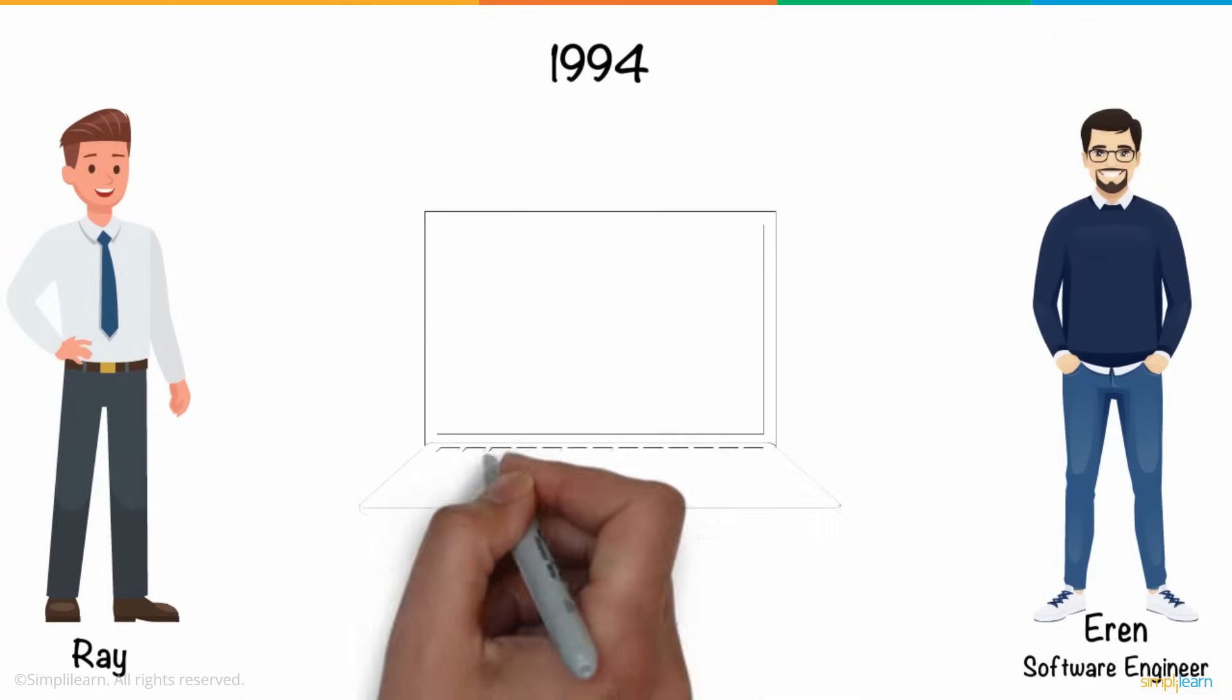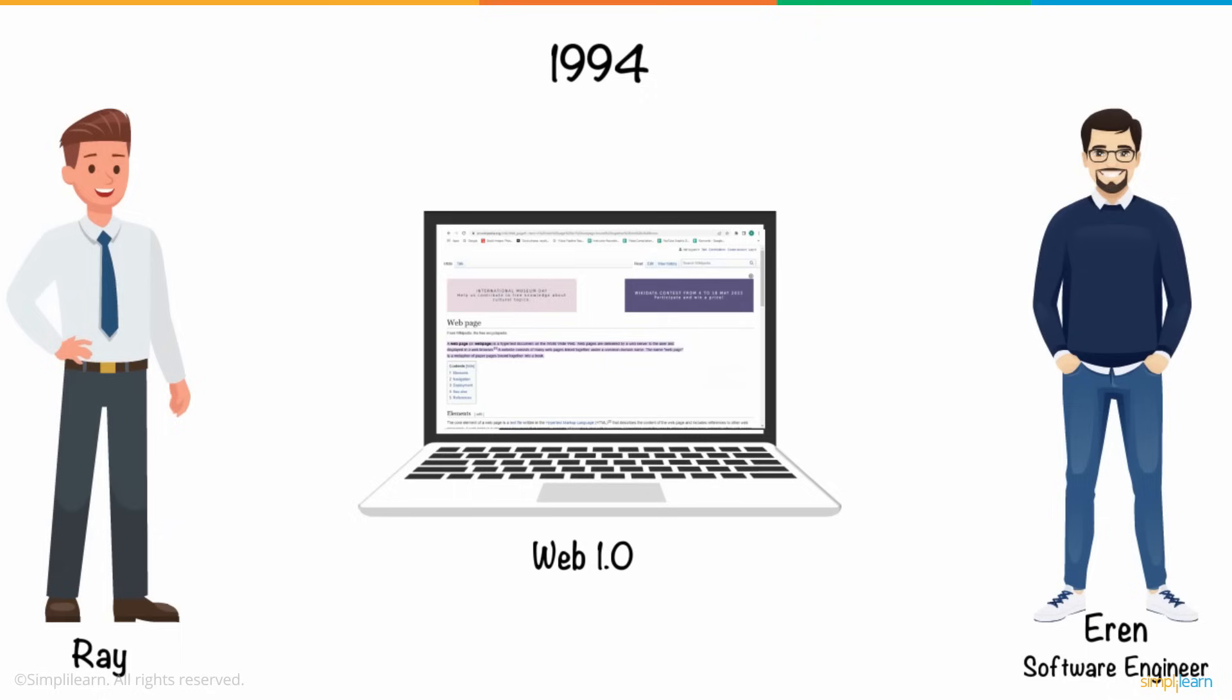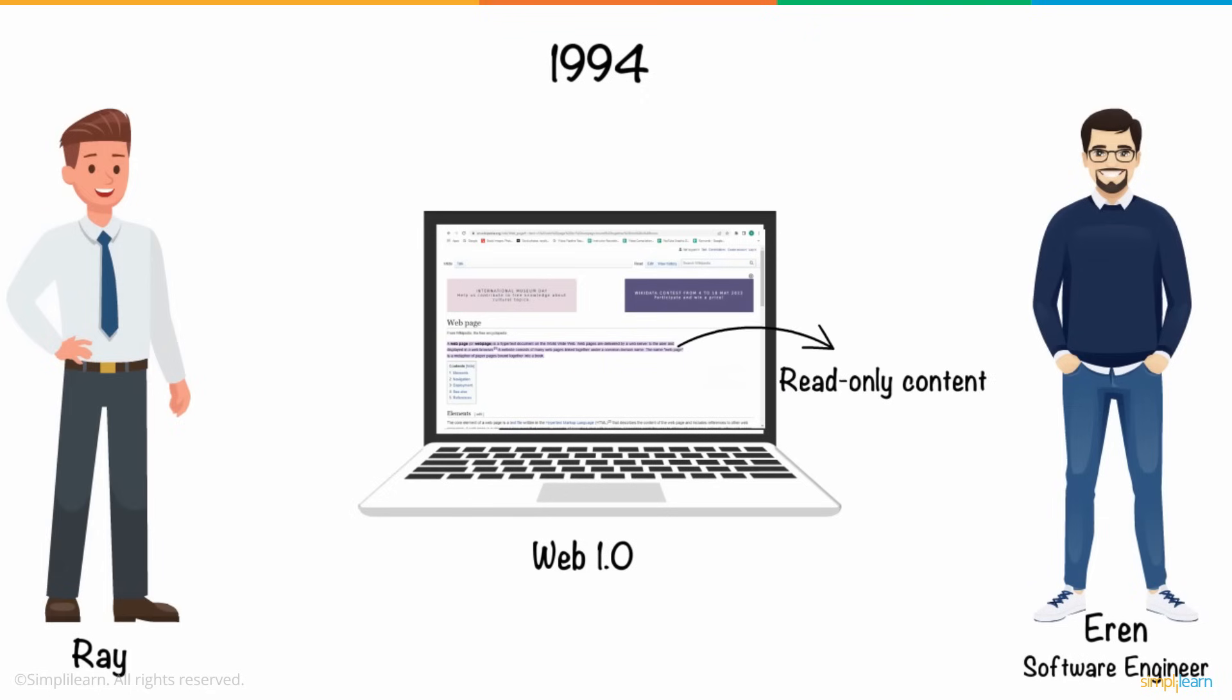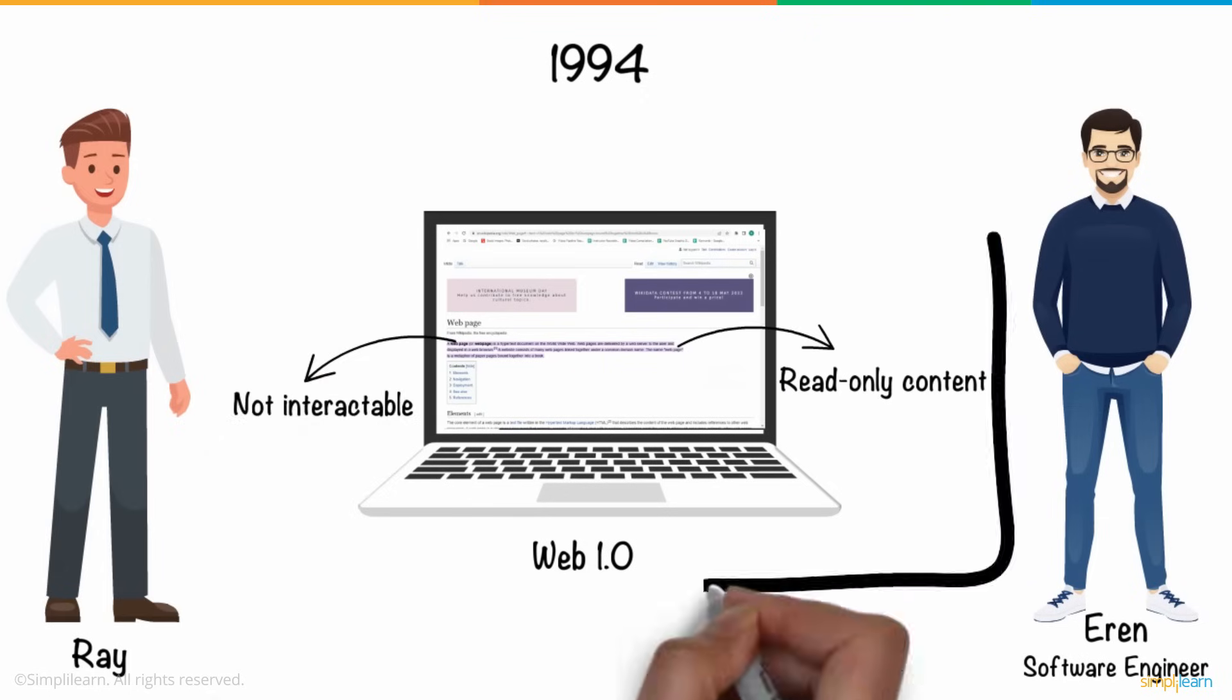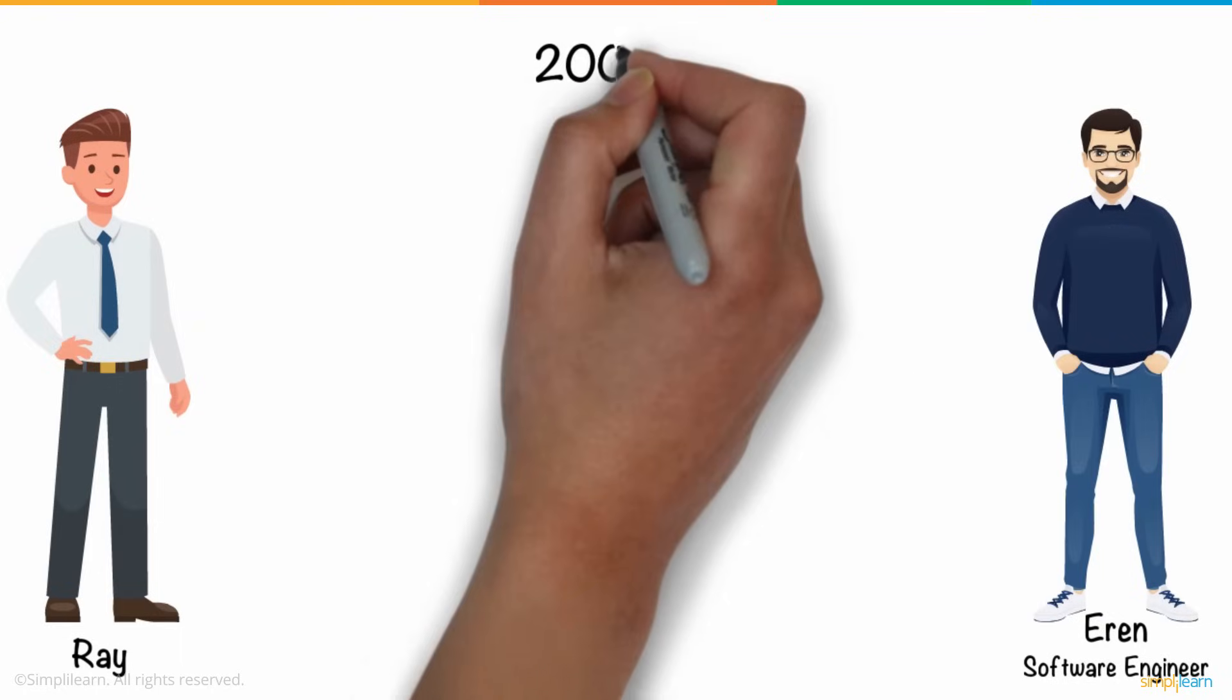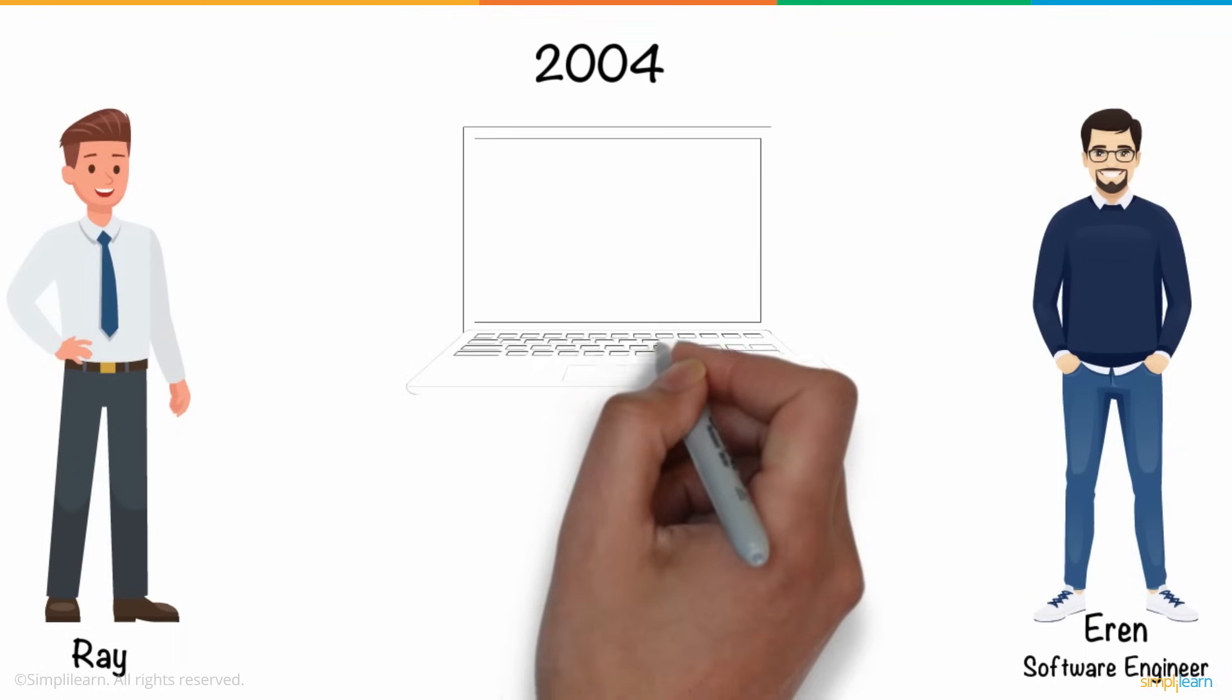It all started in 1994, when Web 1.0 was introduced to the internet. Basically, Web 1.0 was all read-only content that was not interactable and was similar to a huge Wikipedia page. But after a few years in 2004, Web 2.0 came into the picture.